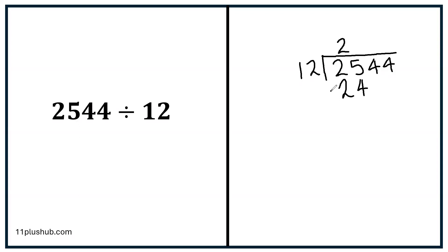Now this bit becomes column subtraction. So we do 5 subtract 4 is 1, 2 subtract 2 gives us nothing. And then we bring the very next number down — we haven't divided this number yet, that number needs to come down. And at the bottom we have 14. Then we carry on: how many times does 12 go into 14? It only goes in once — 12 times 1 is 12. So it goes in once, we put 1 up here, and 12 goes down here.